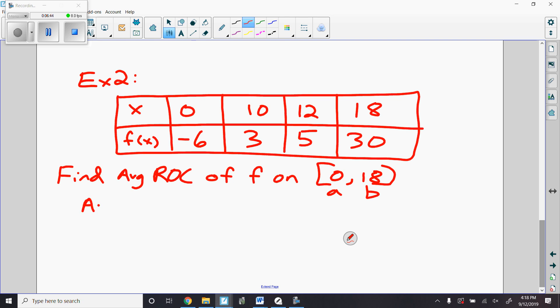So my average rate of change of f on that interval [0,18] would be f of b, so this is going to equal f(18) minus f of a, so minus f(0) over 18 minus 0.